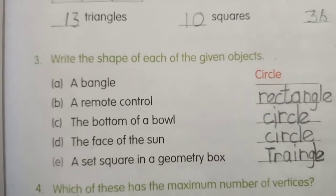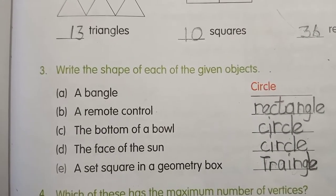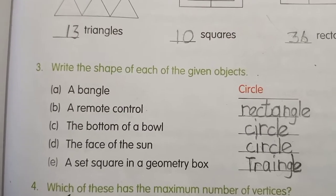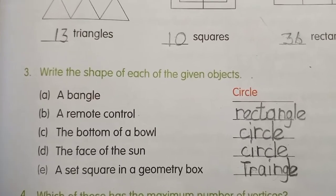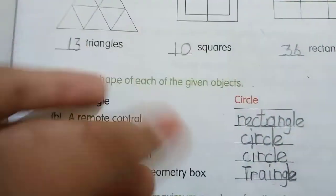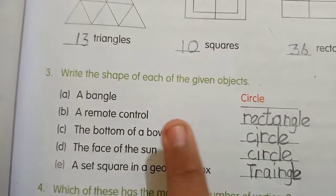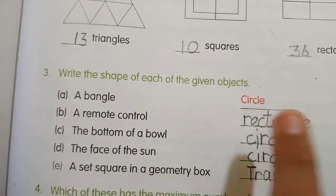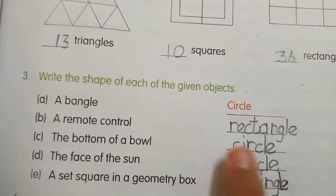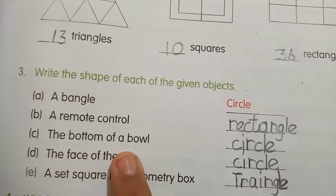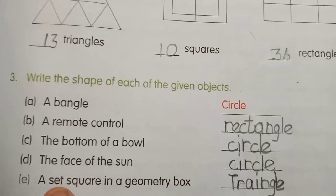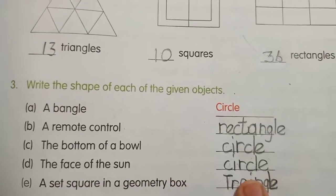Question 3: write the shape of each of the given objects. A. A bangle - circle shape. B. A remote control - rectangle. C. The bottom of a ball - it can be a circle or square. D. The face of the sun - circle. E. A set square in a geometry box is a triangle shape.